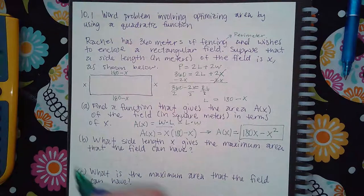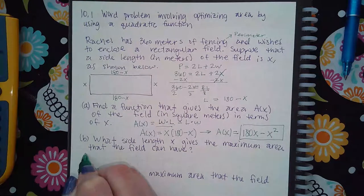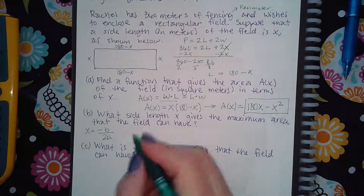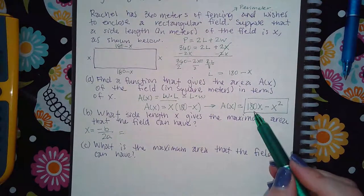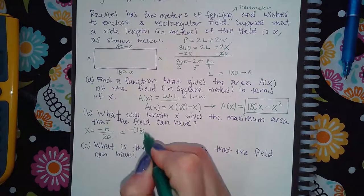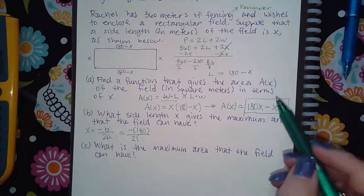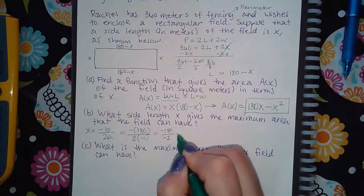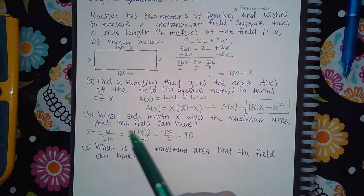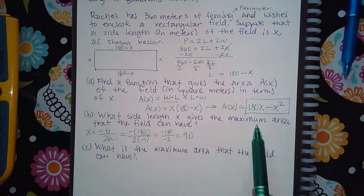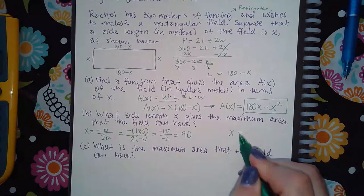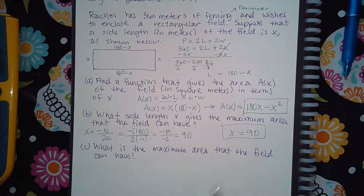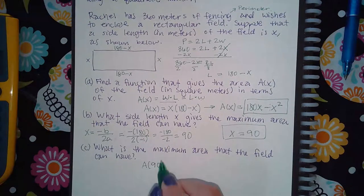For maximum area we need the vertex. Using x = −b/(2a): b is positive 180 (coefficient of x) and a is −1 (coefficient of x²). So x = −180 / (2 × −1) = −180 / −2 = 90. The side length x = 90 gives the maximum area.